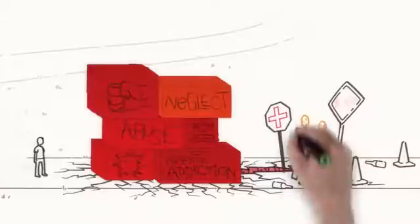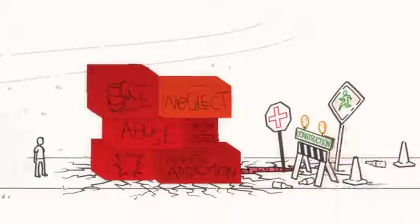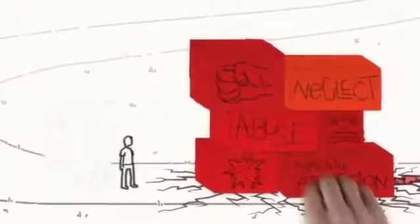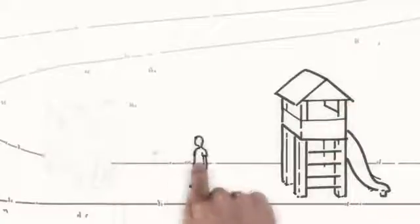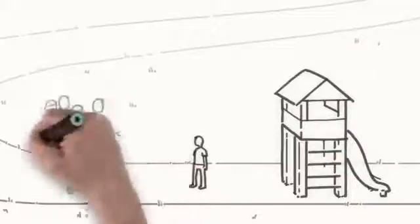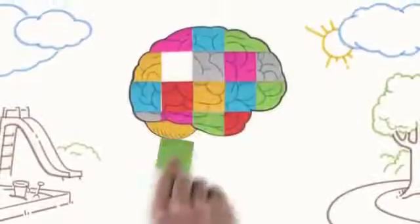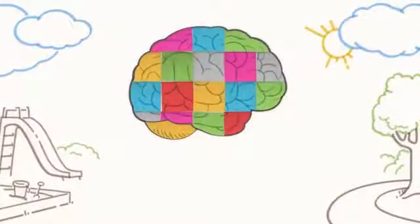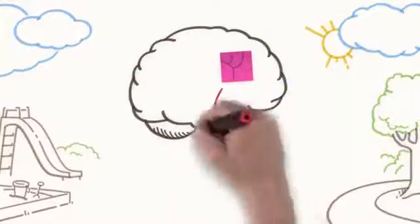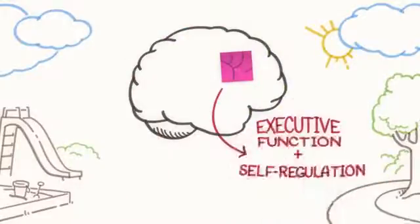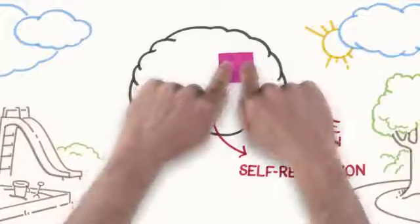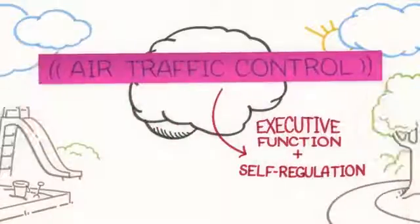It's possible to fix some of the damage of toxic stress later on, but it's easier, more effective, and less expensive to build solid brain architecture in the first place. One of the things that sturdy brain architecture supports is the development of basic emotional and social skills. An important group of skills which scientists call executive function and self-regulation can be thought of like air traffic control in the child's mental airspace.